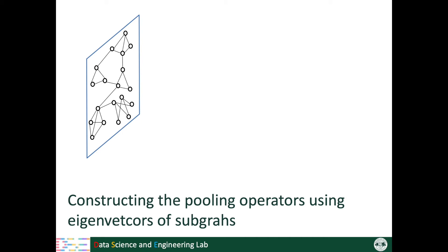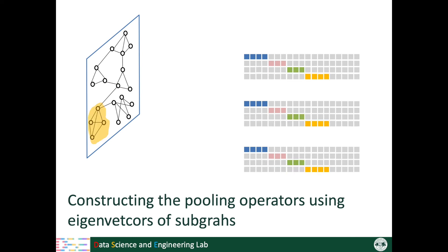As an example, let's now focus on one subgraph, the blue one. We first calculate its eigenvectors and then use the top three eigenvectors to form part of the three pooling operators. We then repeat the procedure for each of the other subgraphs and finally get the three pooling operators.